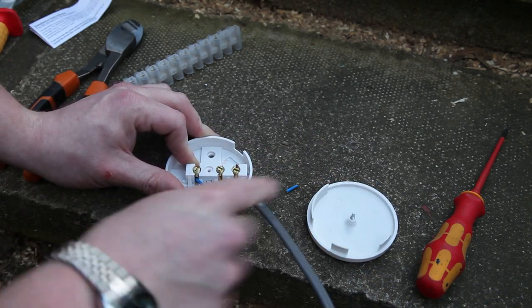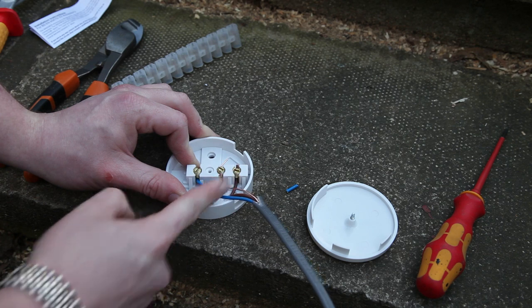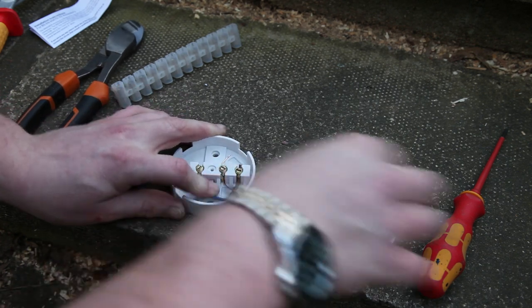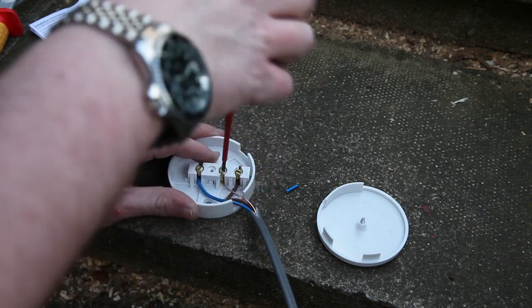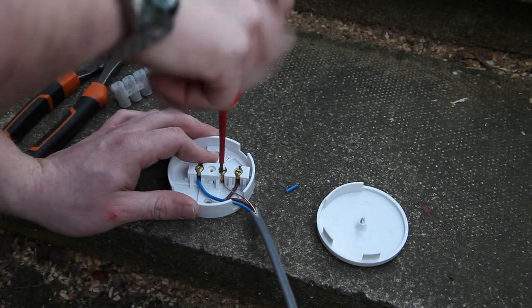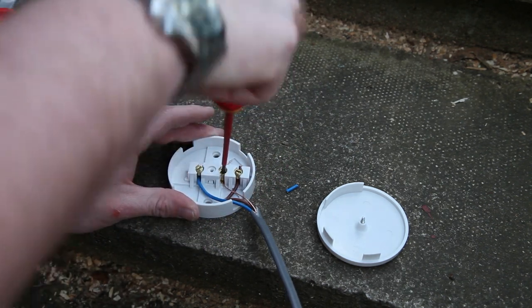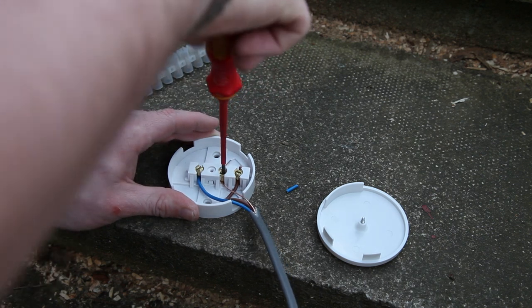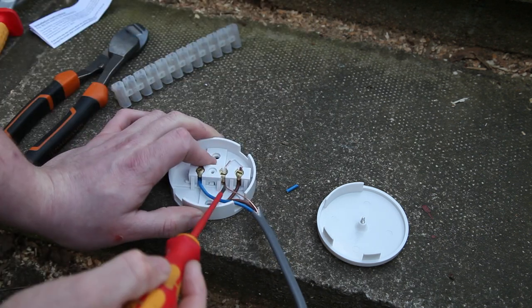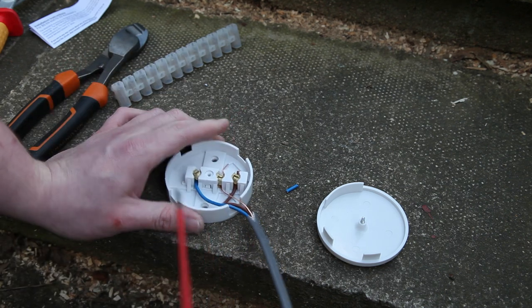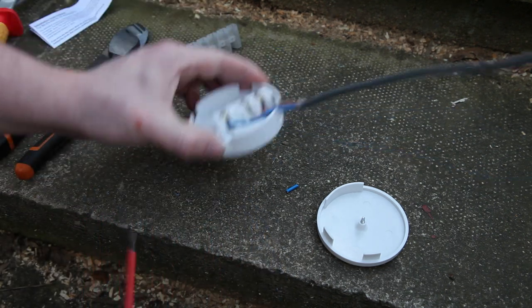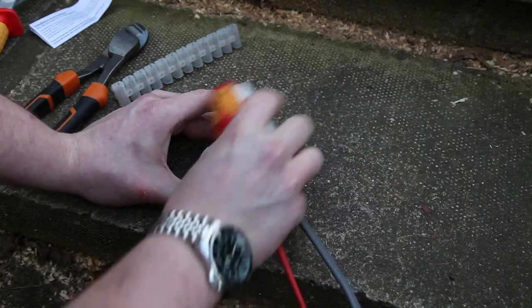And then obviously you would cut that to about there, and then you would just connect your other ones into it and then you would tighten it down. But the problem with these is you can actually over-tighten them, which is like that, and normally just strip and then just pop back out, and then you would just have to buy a new bloody box. So they're not very good, these.